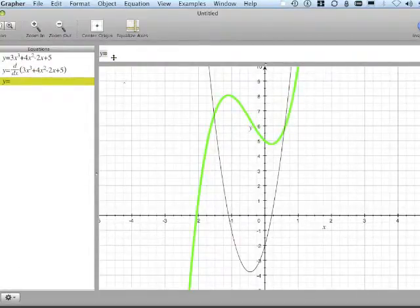If we would enter the derivative manually, we would have y = 9x² + 8x - 2.